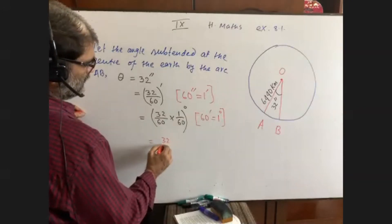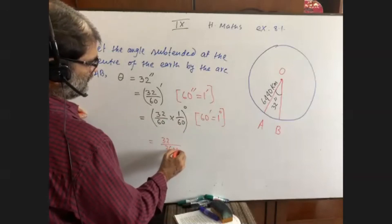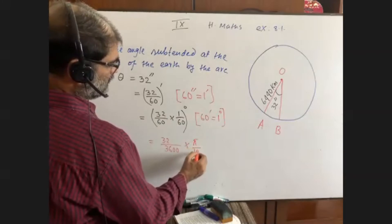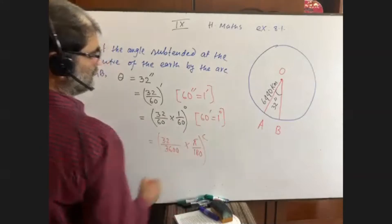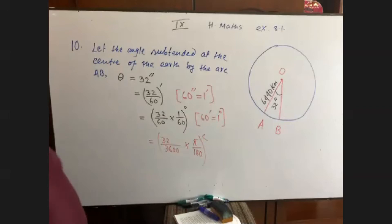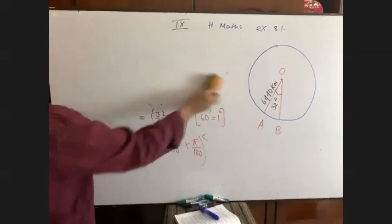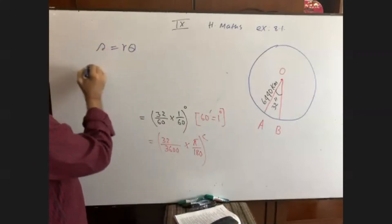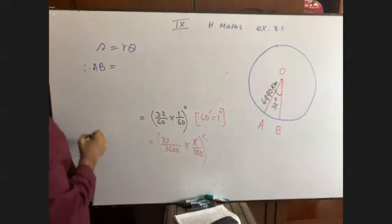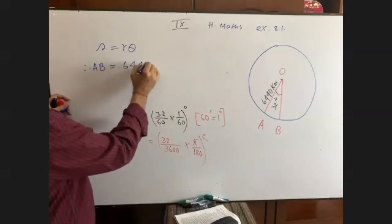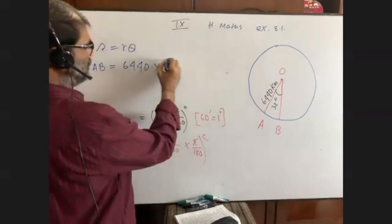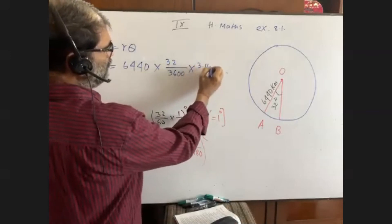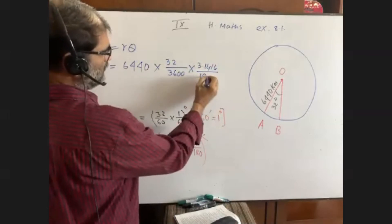32 seconds equals 32 by 60 minutes. 60 seconds equals 1 minute. Then we can write 32 by 60 into 1 by 60 degrees — that means, since 60 minutes equals 1 degree, this is 32 by 3600 degrees, into pi by 180 radians.